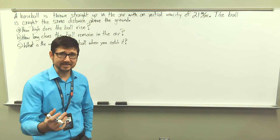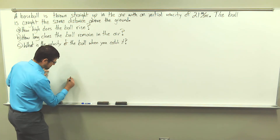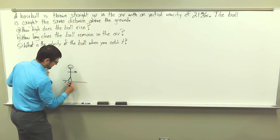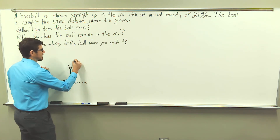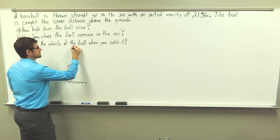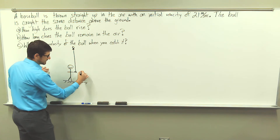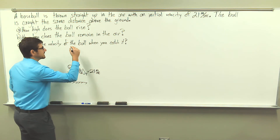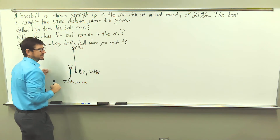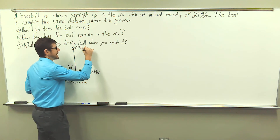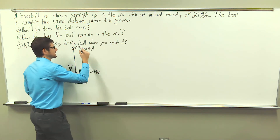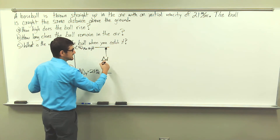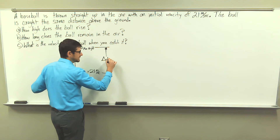Let's first draw a simple diagram. This is where the ball starts — this is you. I'll draw the ground here as our static surface. You throw the ball up and it comes to a stop right here at the top. I'm going to call this the initial velocity in the y direction: 21 meters per second. Up here is the final velocity at maximum height. Now, let's start with the change in displacement — delta D, the change in the baseball's displacement to maximum height.